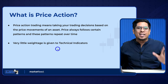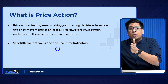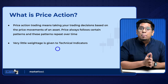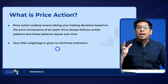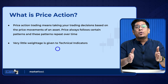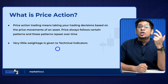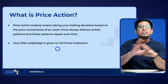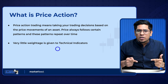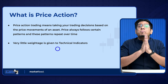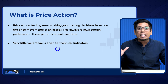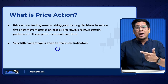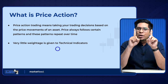Price action traders give very little weightage to technical indicators. The strong parts of price action trading are: candlestick analysis, candlestick patterns, volume analysis, trend line analysis, support and resistance — all of those plus the chart patterns we're learning today. You're not adding any technical indicator on your chart; you're only looking into these tools and with them trying to find breakout points, breakdown points, or trend reversals.